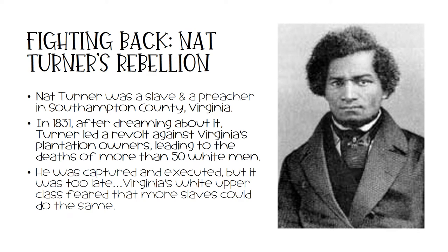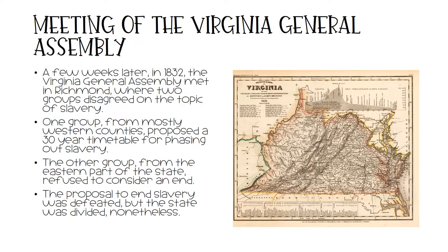Nat Turner was a slave and a preacher in Southampton County, Virginia. In 1831, after waking up from a vivid dream about it, Turner led a revolt against Virginia's plantation owners, leading to the deaths of more than 50 white men. He was captured and executed, but it was too late. Virginia's white upper class feared that more slaves could do the same. A few weeks later, in 1832, the Virginia General Assembly met in Richmond, where two groups disagreed on the topic of slavery. One group from mostly western counties proposed a 30-year timetable for phasing out slavery. The other group from the eastern part of the state refused to consider an end. The proposal to end slavery was defeated, but the state was divided nonetheless.